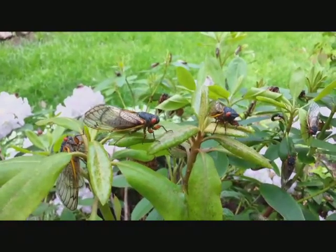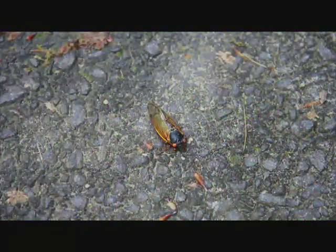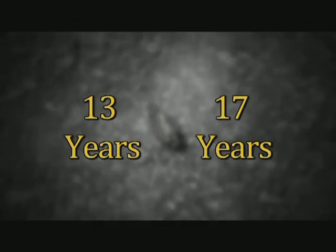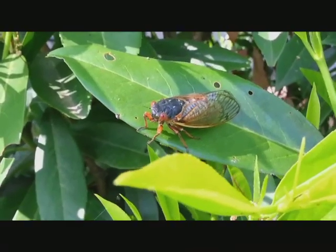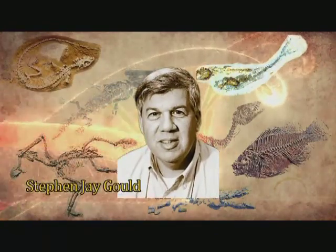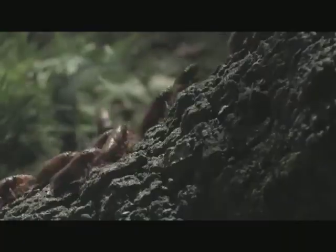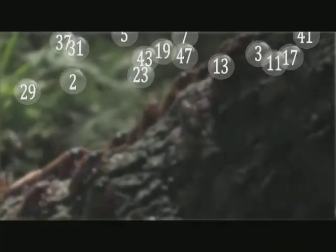Now, have you spotted the prime connect? Yes. The number of years they incubate, 13 and 17, are both prime numbers. For a long time, people dismissed this as coincidence, until Stephen Jay Gould, an American paleontologist and evolutionary biologist, came up with a theory that primes help protect cicadas.